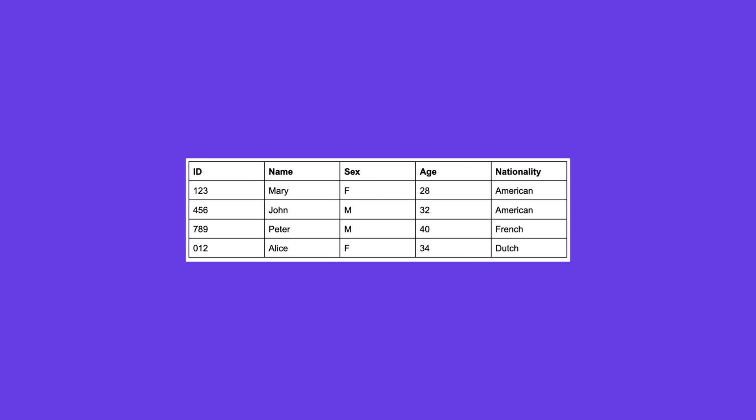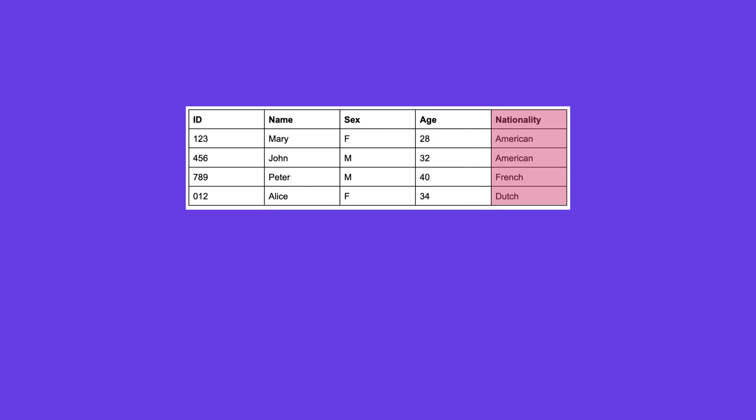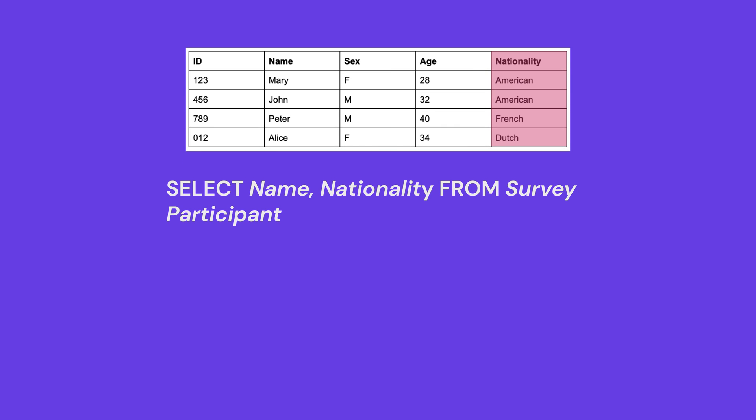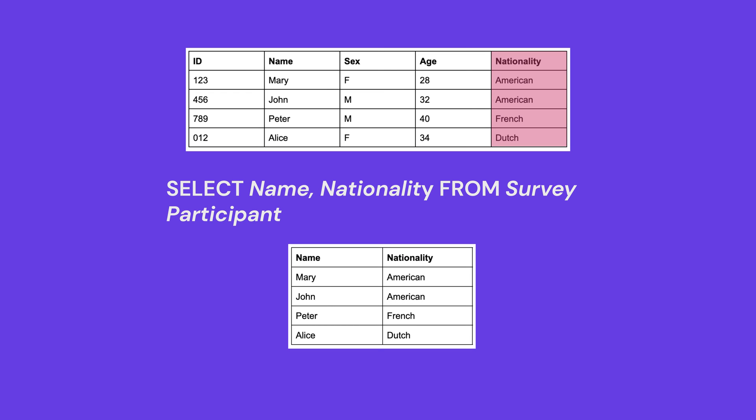Now let's dive into examples of queries using an SQL database. Suppose that you have collected data from a survey and arranged it in a table. If you want to create a table that only contains certain criteria, you can create a query using a SELECT command. For example, if we want information about the participant's nationality, the SQL statement will look like this, and it will generate a table with the requested information. You can modify the variables according to which information you want to feature.